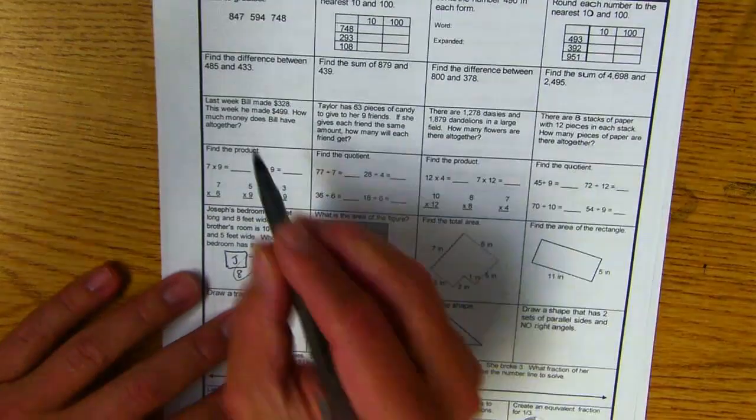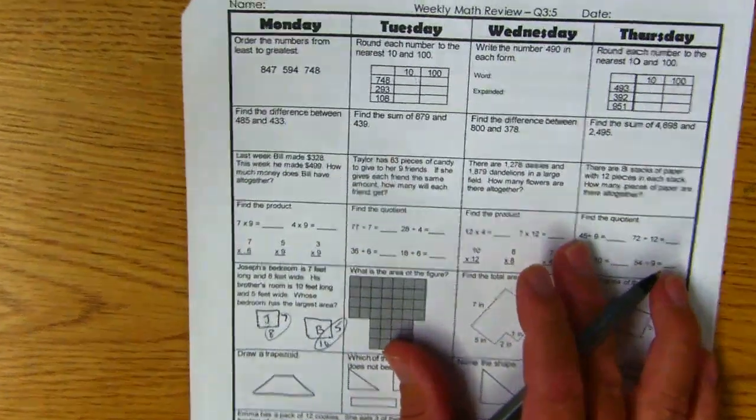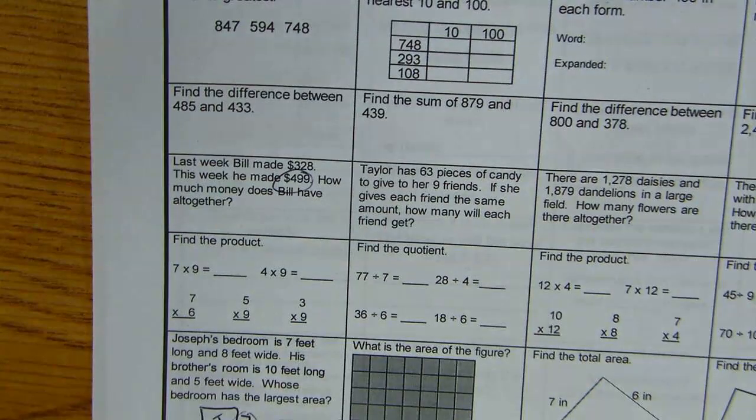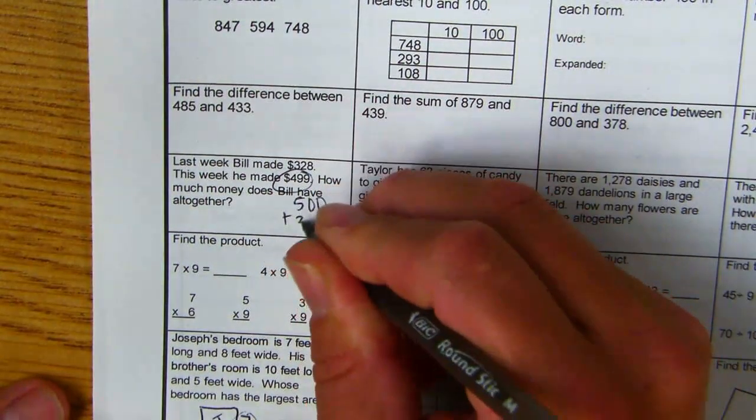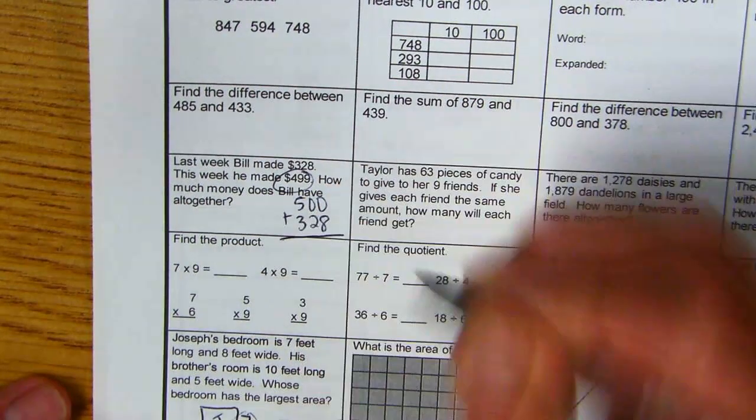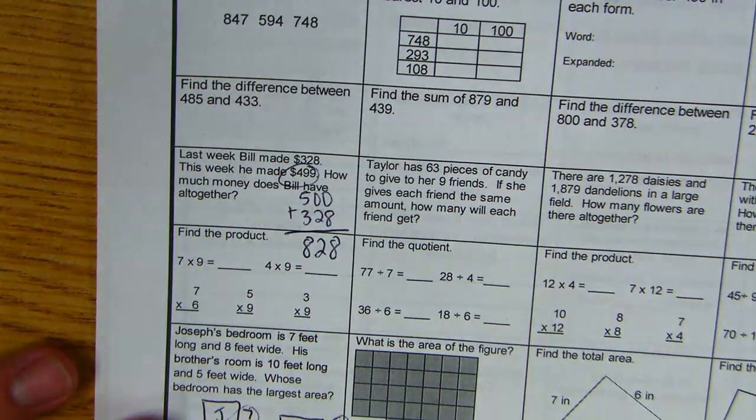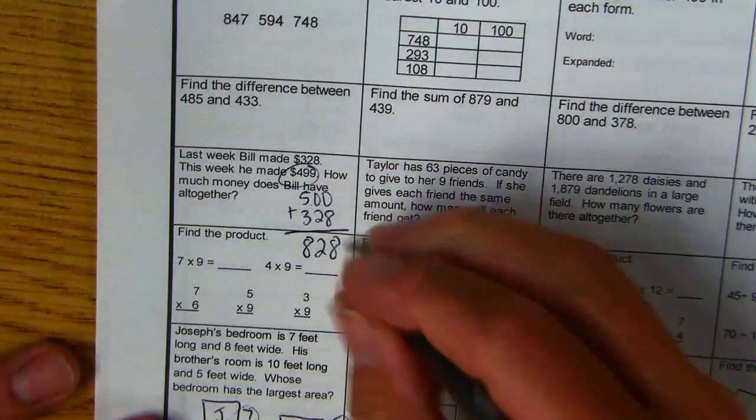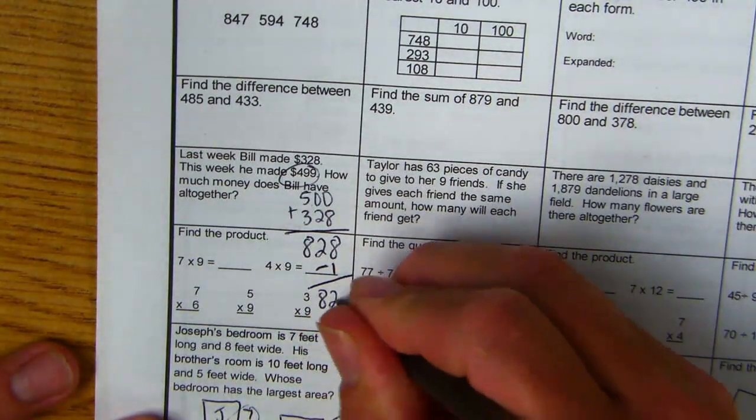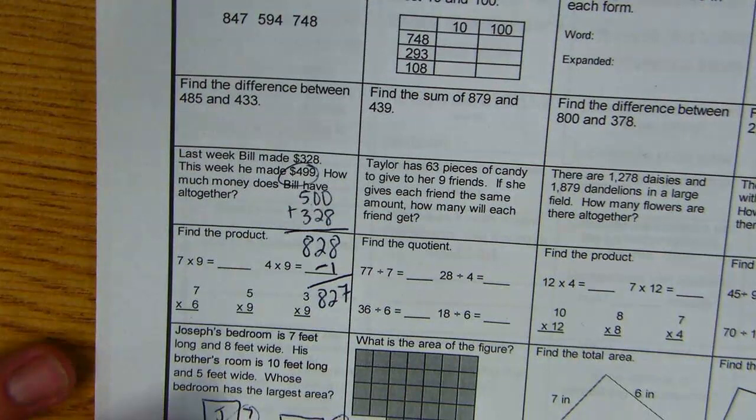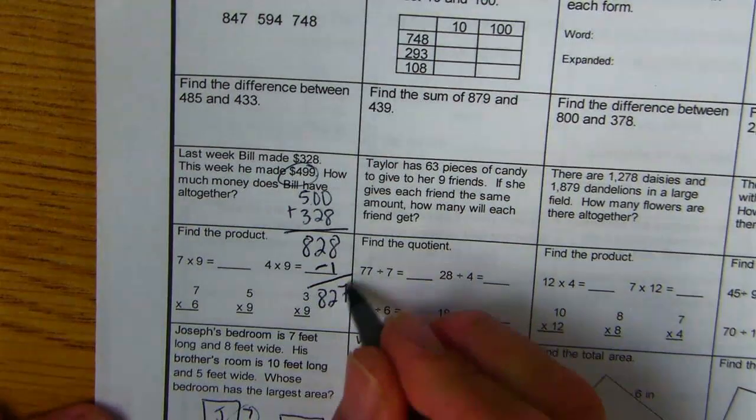Okay, what do we got here? How much money does Bill have all together? We've talked about this before. 499 is close to 500, so you could go 500 plus 328 is going to give you 828. But remember I added one to make it 500, so you just have to subtract one that you added. 827.